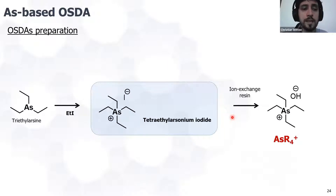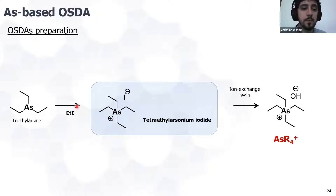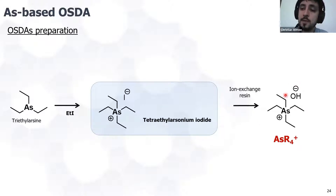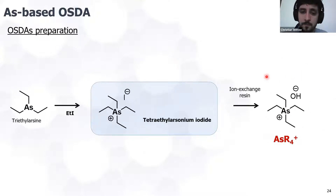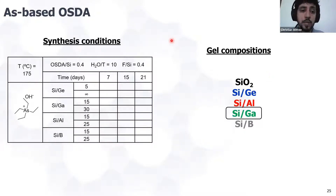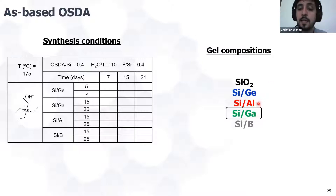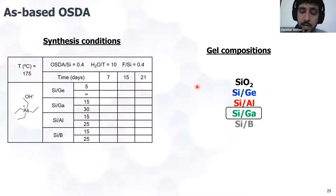For OSDA preparation, we used trialkyl-arsine and performed an alkylation to obtain the tetra-alkyl-arsonium iodide. For zeolite synthesis, we normally employ hydroxide anions, so we performed an ion exchange process to obtain the hydroxide form. The synthesis conditions employed different ratios of reactants, and the gel compositions were pure silica, germanosilicate, aluminosilicate, gallosilicate, and borosilicate. For this work, I will focus on the gallosilicate because we also studied the gallium K-edge by X-ray absorption spectroscopy.